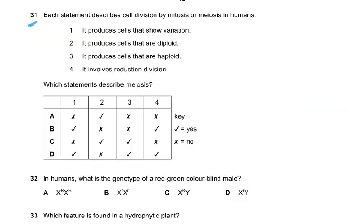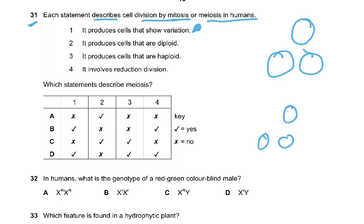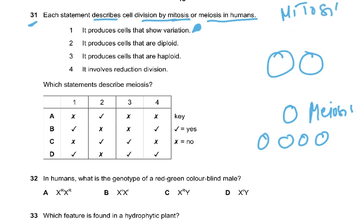Question 31: Each statement describes cell division by mitosis or meiosis in humans. Meiosis produces cells that show variation; mitosis produces two identical cells. One cell resulting in two cells is mitosis. Meiosis produces cells that are haploid, not diploid, and involves reduction division — meaning halving the number of chromosomes. So the answer is D, covering statements 1, 3, and 4.